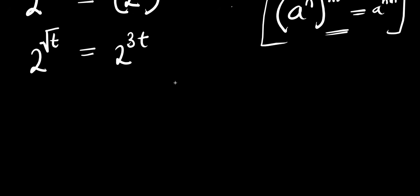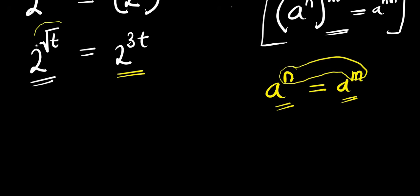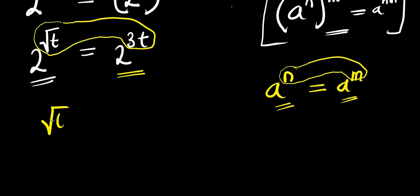If you observe this equation right now, the base here — that is 2 — is also the base here. So what you are going to do is apply this other identity: if a to the power of n equals a to the power of m, as long as the bases are the same, you can equate the exponents. Since the bases are the same, you are going to compare the exponents, meaning root t equals 3t.